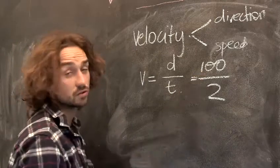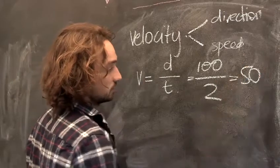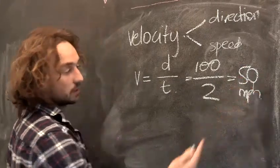That means my velocity is a hundred... For every two hours, I travel a hundred miles. So, in one hour, I travel 50 miles. That's my velocity. 50 miles per hour is my velocity.